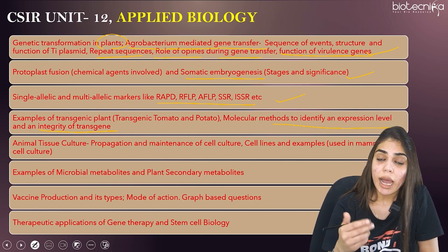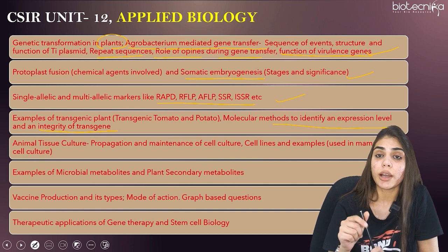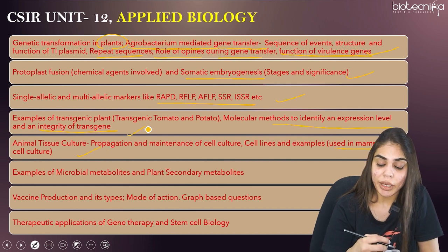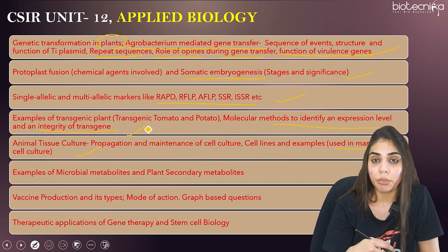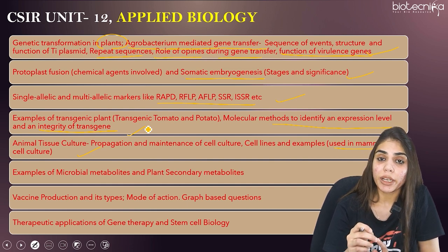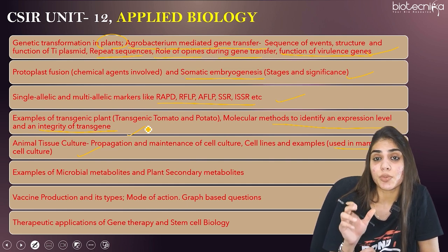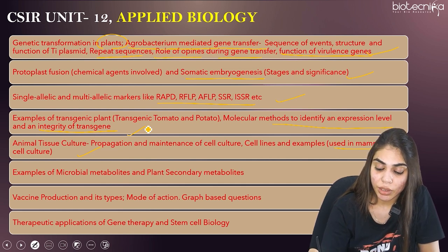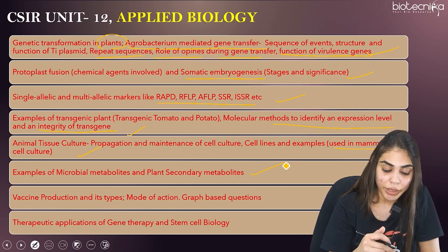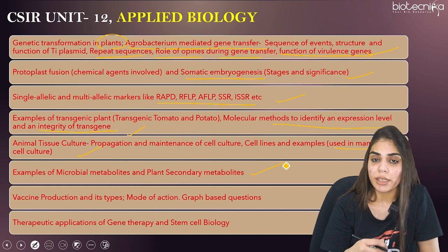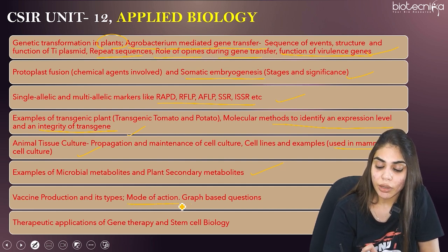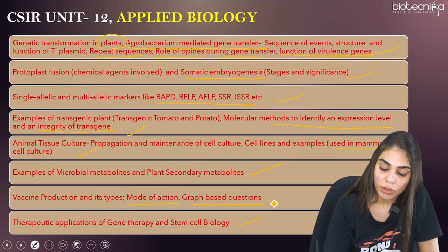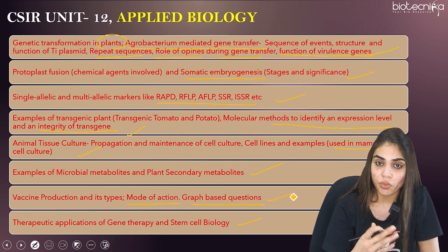The next is animal tissue culture — propagation and maintenance of cell lines, and examples of cell lines used for mammalian cell culture. Also learn microbial metabolites — primary metabolites formed in log phase and secondary metabolites formed during stationary phase, with examples. Vaccine production and its types are also important — mode of action, examples, and expect graph-based questions. The last topic is therapeutic applications of gene therapy and stem cell biology.